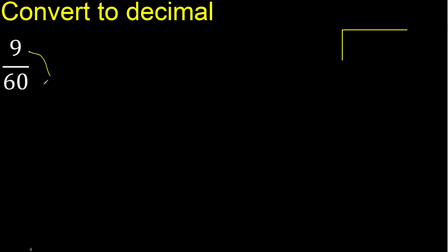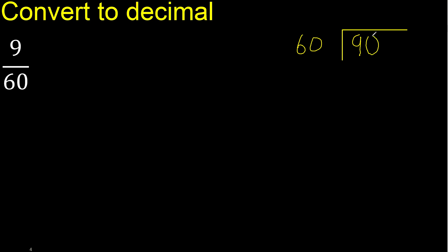9 divided by 60. 9 is less, therefore complete — always complete with 0.